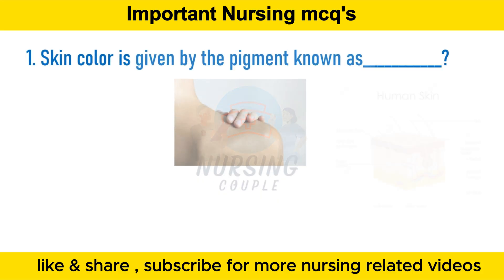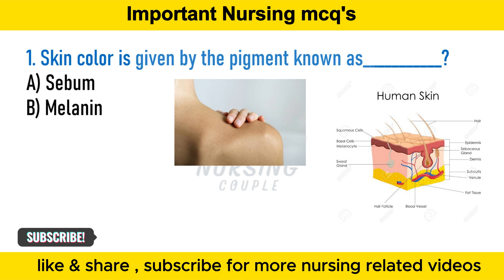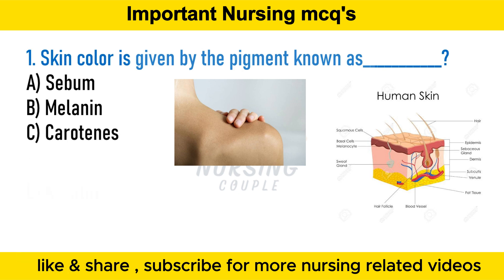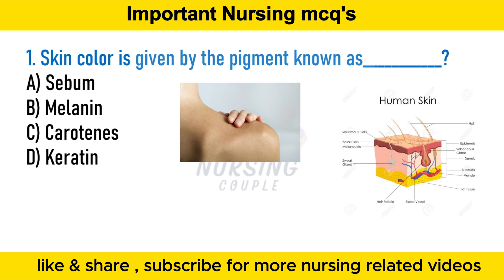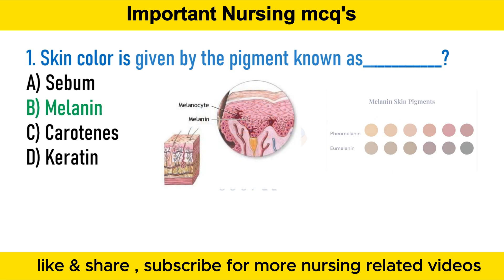The skin color is given by the pigment known as: option A sebum, option B melanin, option C carotene, option D keratin. The answer is option B melanin. Melanin is a complex polymer that originates from the amino acid tyrosine.